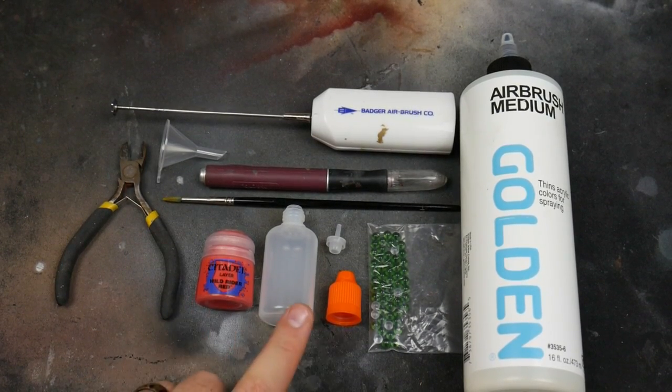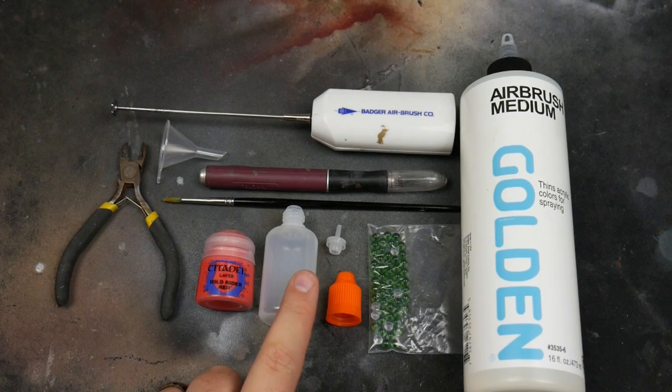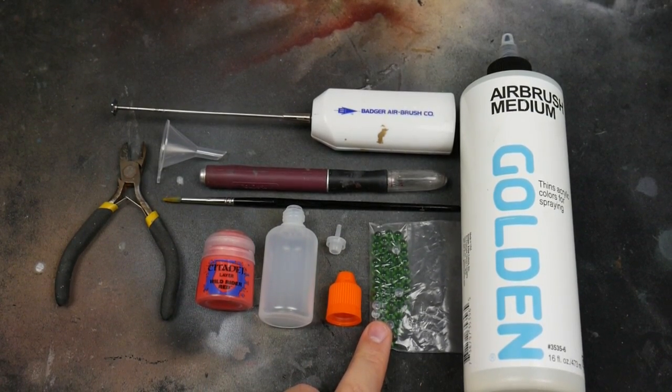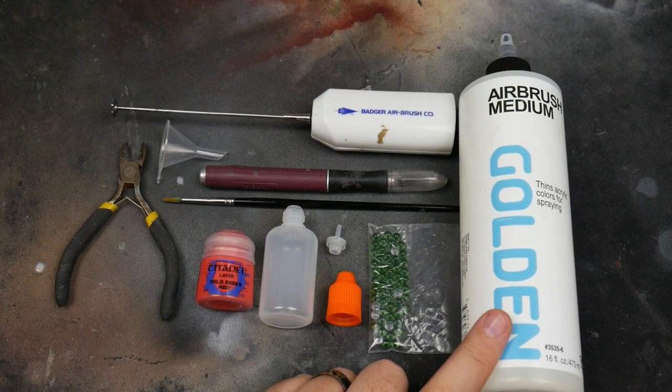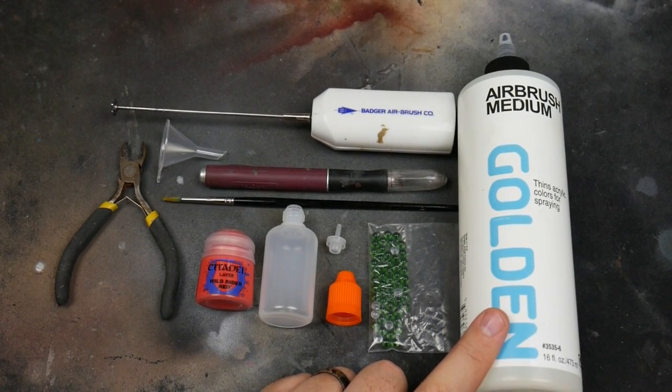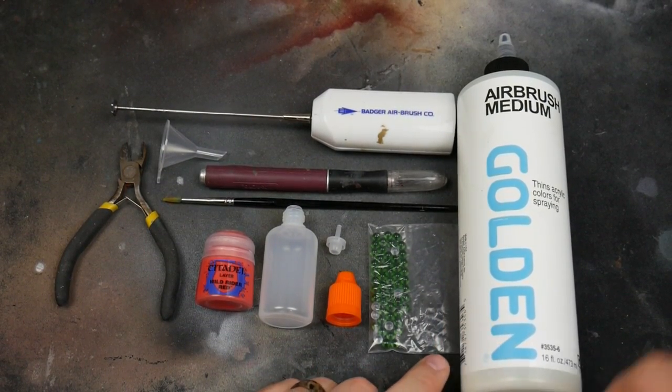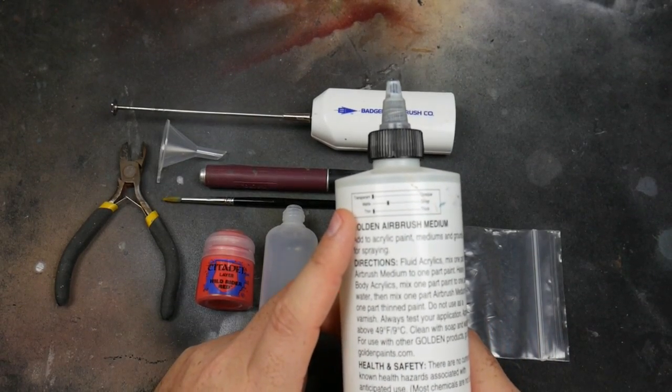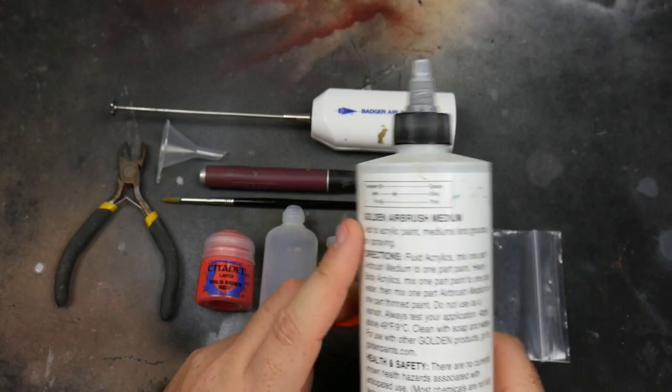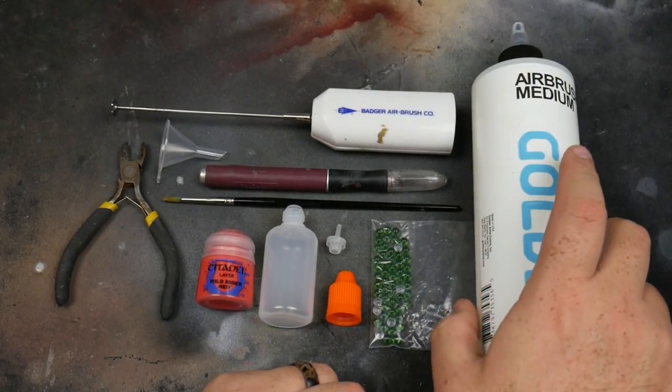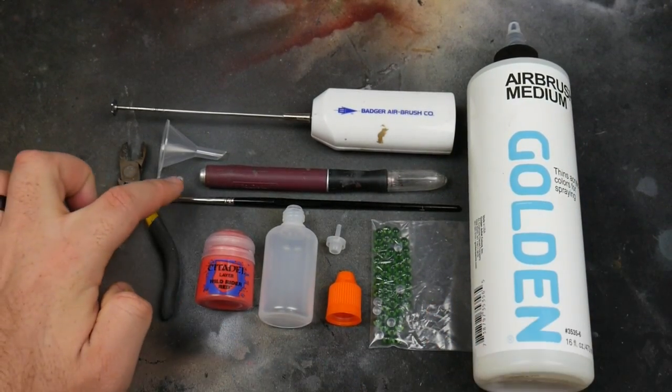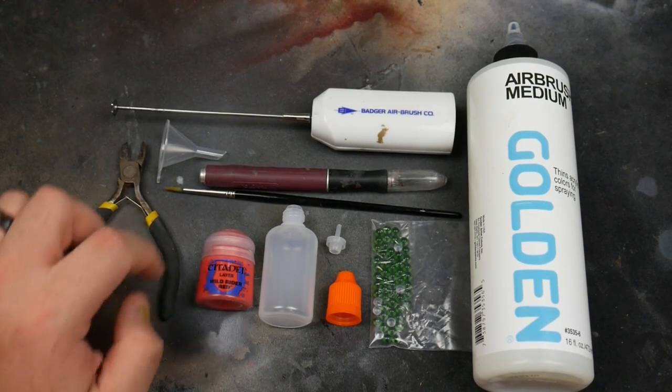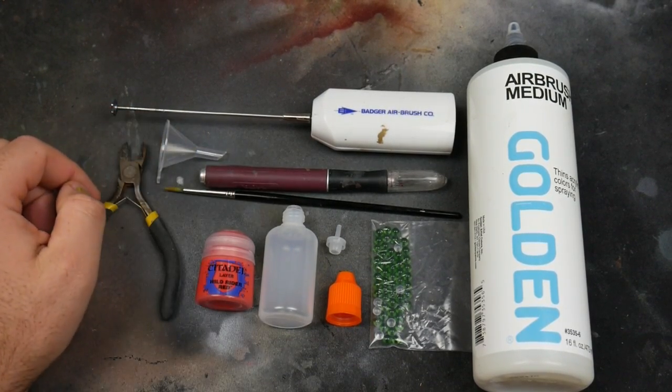Some sort of dropper bottle system, agitator beads, a medium of choice - not water, not flow improver. This is an airbrush medium, a semi-matte medium. We'll need a junky brush, some sort of razor knife, hobby knife, exacto knife.